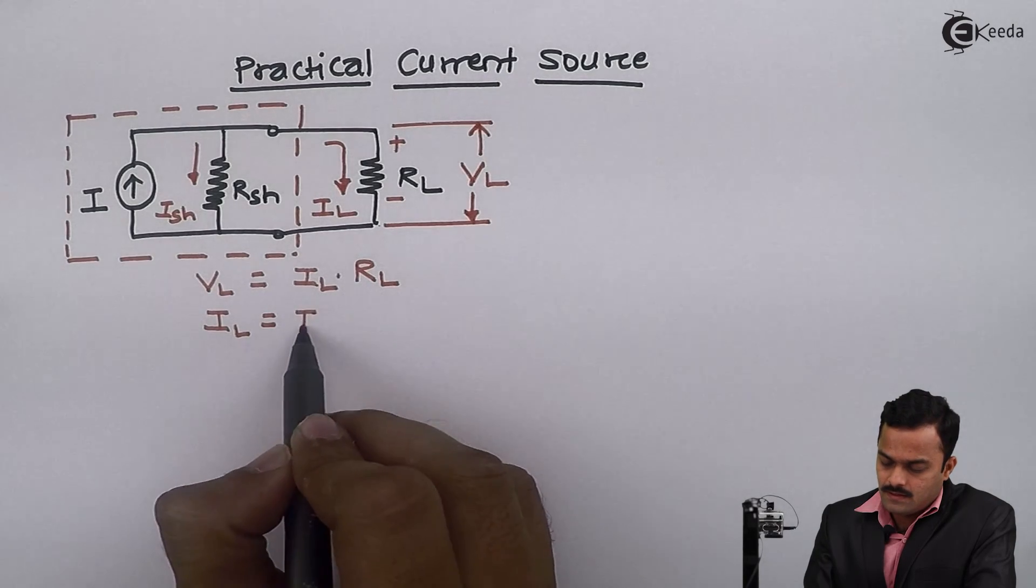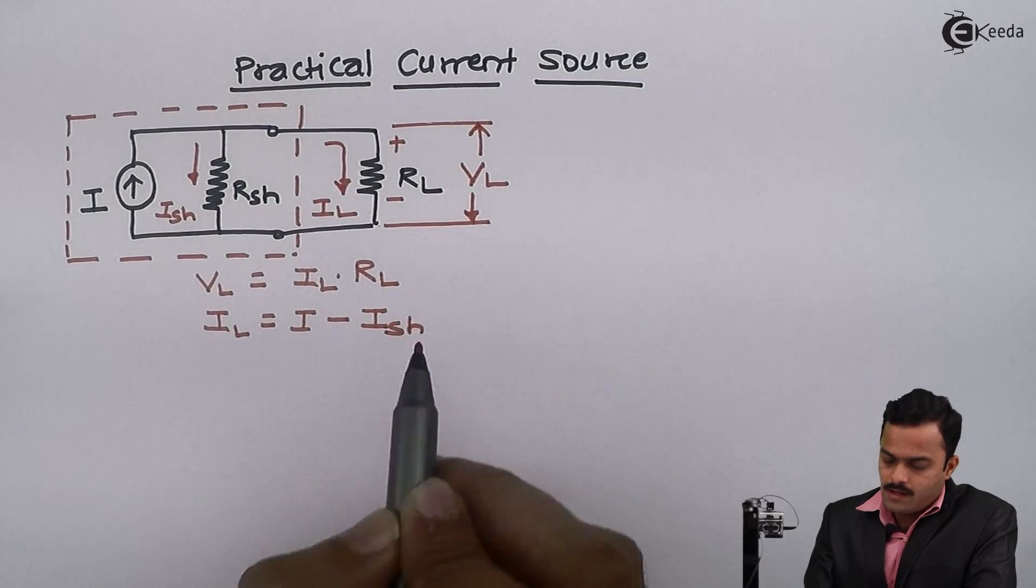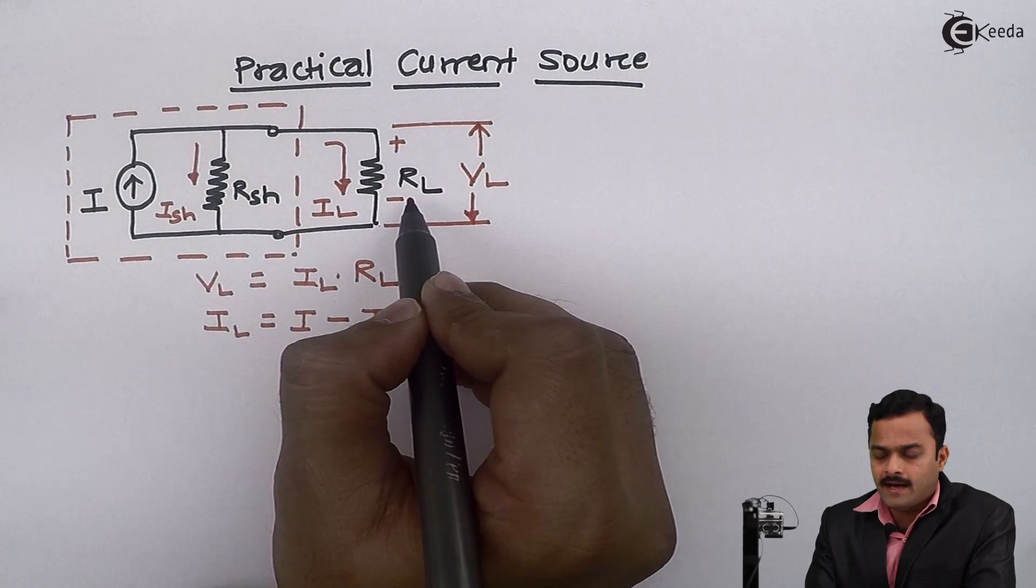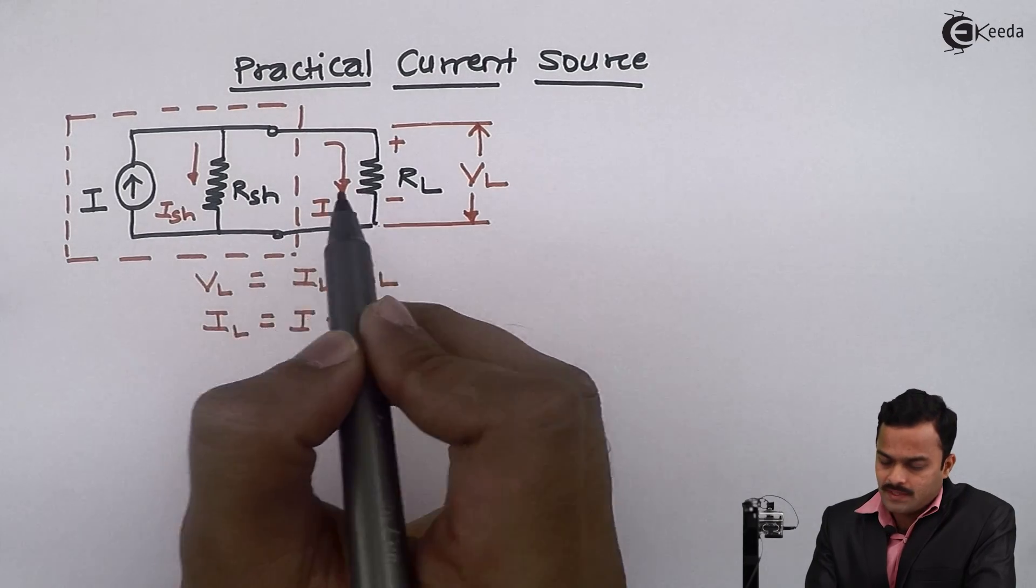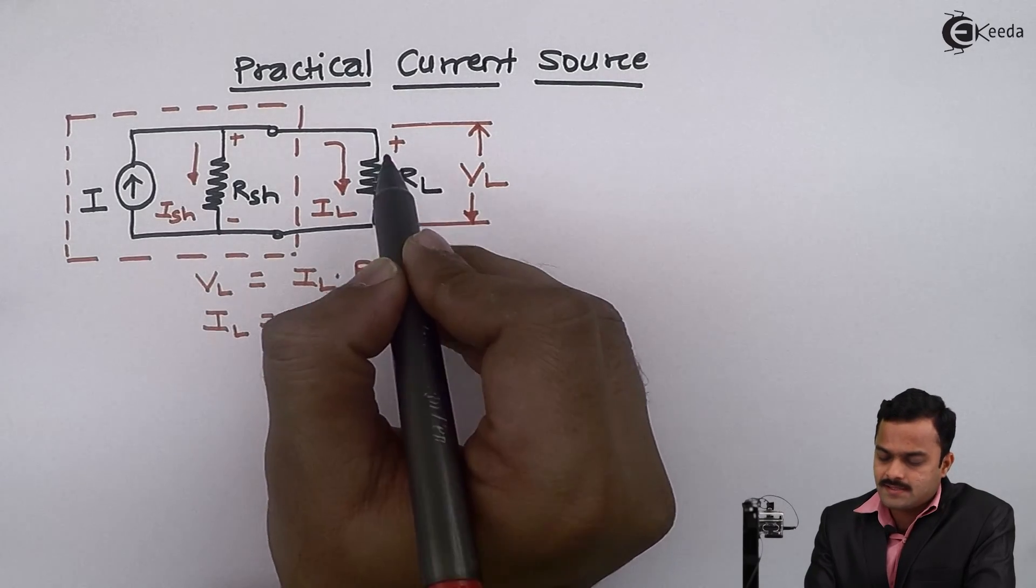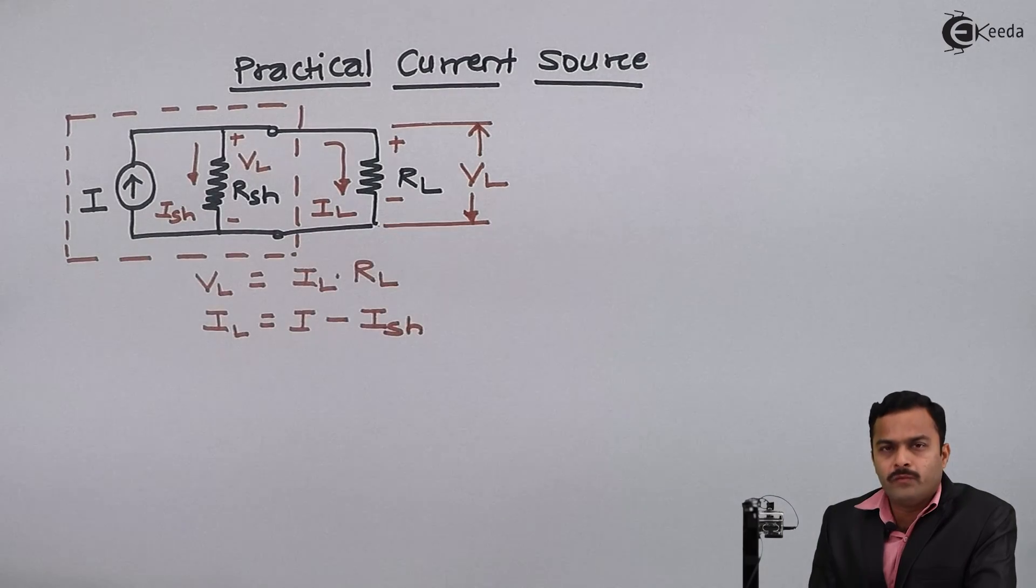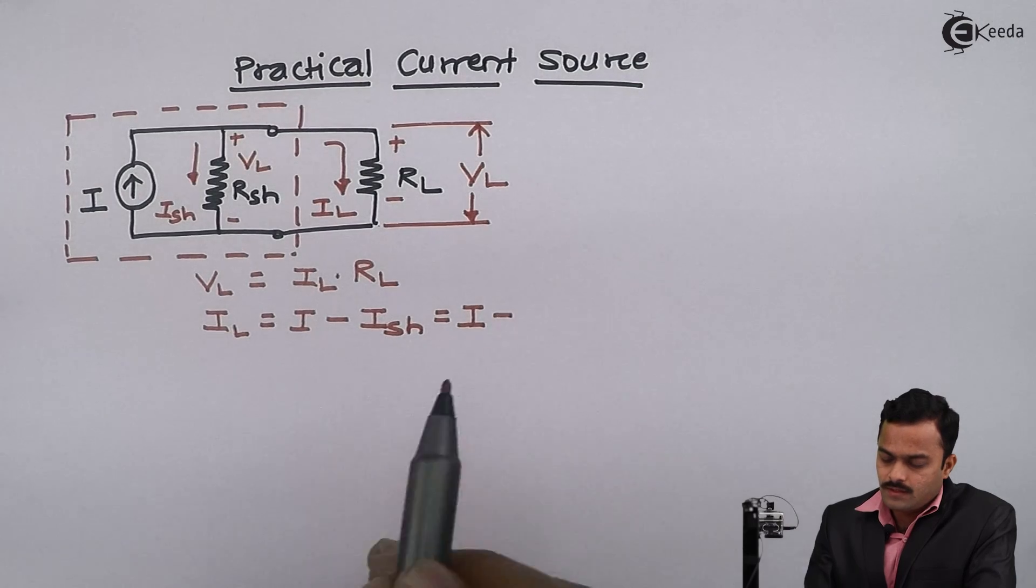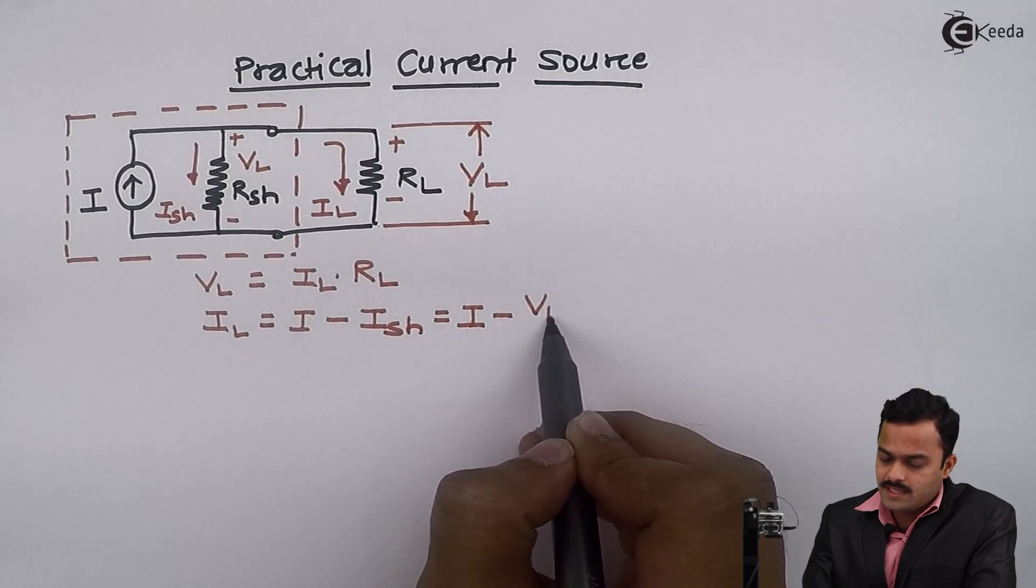Since Rsh and RL are in parallel that means fixed voltage being applied across them, so the voltage across this Rsh is same as voltage across this RL equal to VL. So what I will do, instead of this Ish I can write voltage divided by resistance.